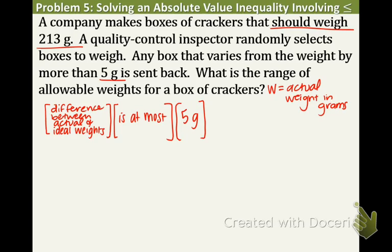And now we need to make it an absolute value inequality. So the difference between, difference means subtraction. And the actual weight is going to be W. And the ideal weight is 213 grams. So there's our difference. Is at most means less than or equal to. That means we cannot go over the 5. 5 grams is at most the number that we can go over.